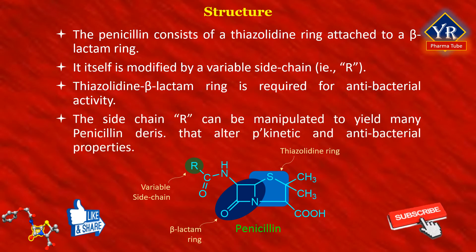The side chain R can be manipulated to yield many penicillin derivatives that alter the pharmacokinetic properties of the drug and the antibacterial spectra of activity.